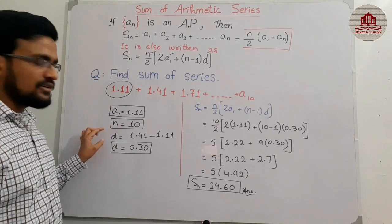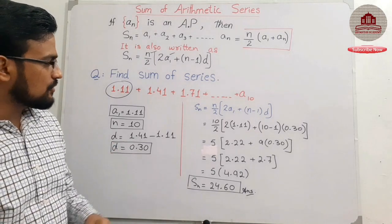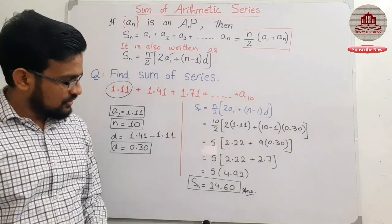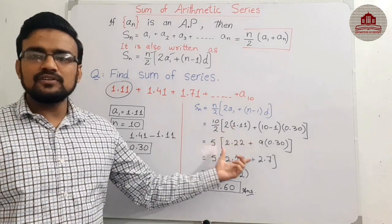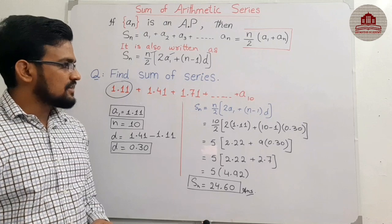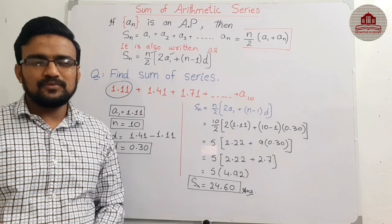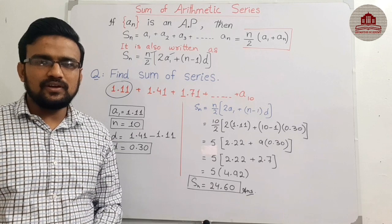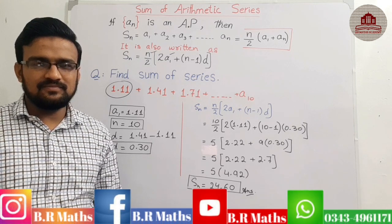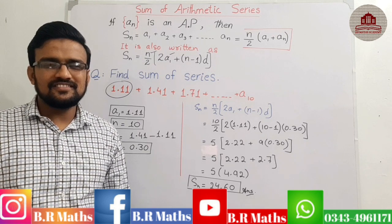By using the second formula for sum, we can put values into the formula and after calculation the final result is 24.6. This is the sum of that arithmetic progression. I hope you understand. If you have any problem about this topic, you can mention it in the comments and we will discuss it in the next lecture. Thanks for watching. If you like this lecture, please like it and subscribe. Take care, students. Allah Hafiz.